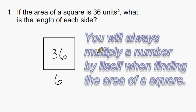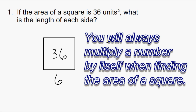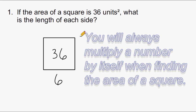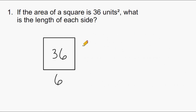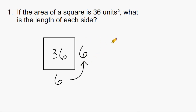An incorrect answer I see a lot of students come up with is 9, because they confuse perimeter with area. They think you do 4 times 9 to get 36, but that would be incorrect. The length is 6 and the width is 6, and 6 times 6 produces an area of 36 square units.